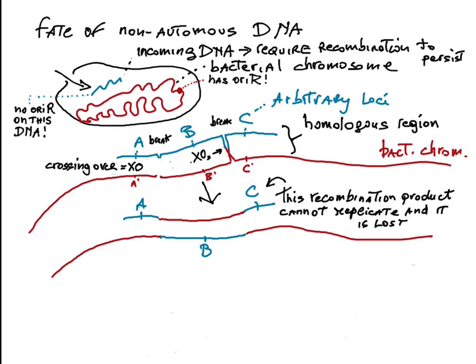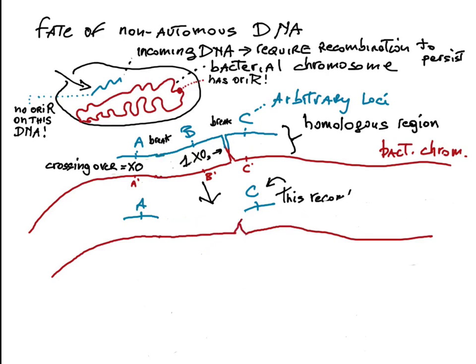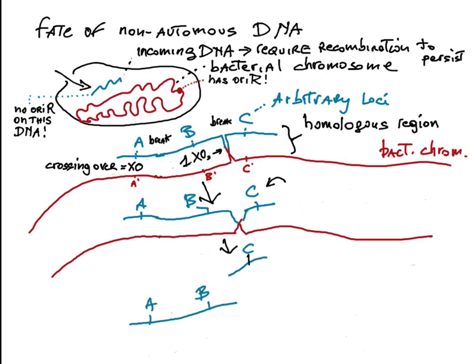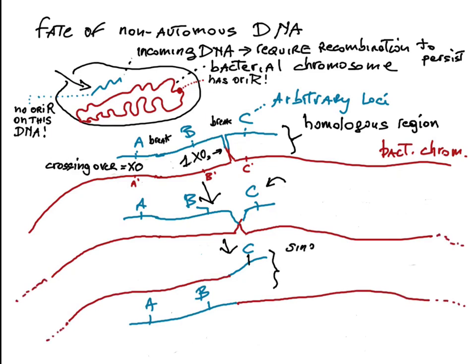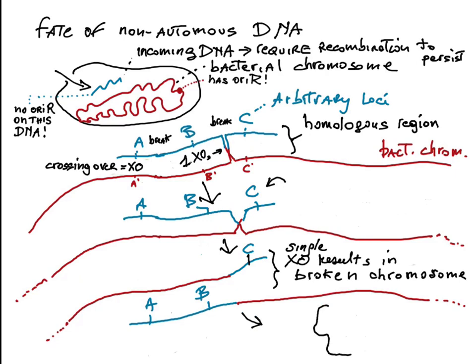Between B and C, the recipient circular chromosome would be broken as a result of a single crossing over. This would prevent its replication and ultimately kill the cell.